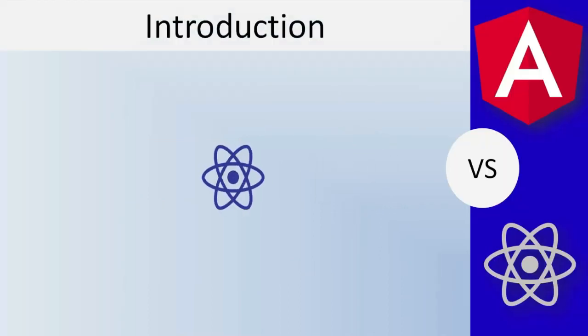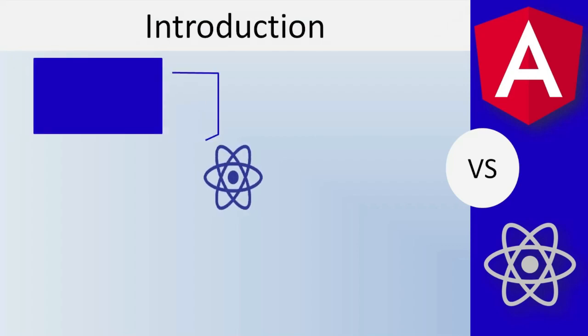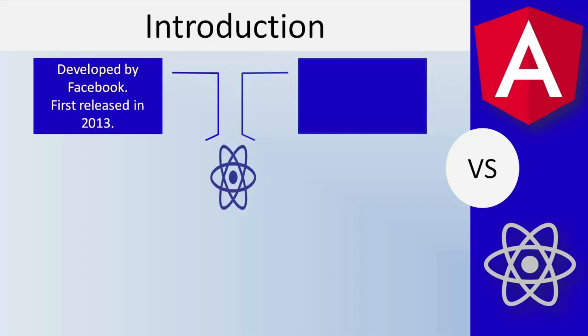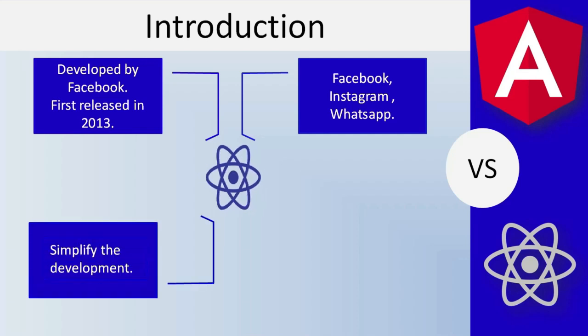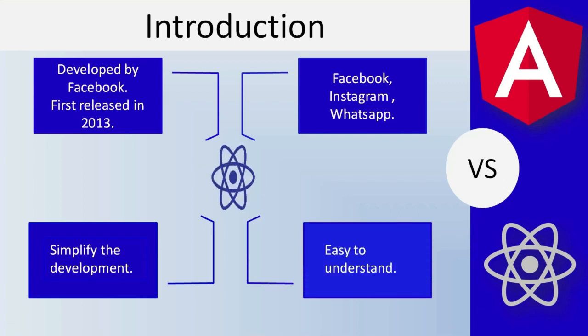React was developed by Facebook and was initially released in 2013. Facebook uses React extensively in their products, that is Facebook, Instagram and WhatsApp. The current stable version is 16.x, released in November 2018. React had a simple aim to divide the UI into a collection of components to simplify the development process of visual interfaces. In React, codes are easy to understand.